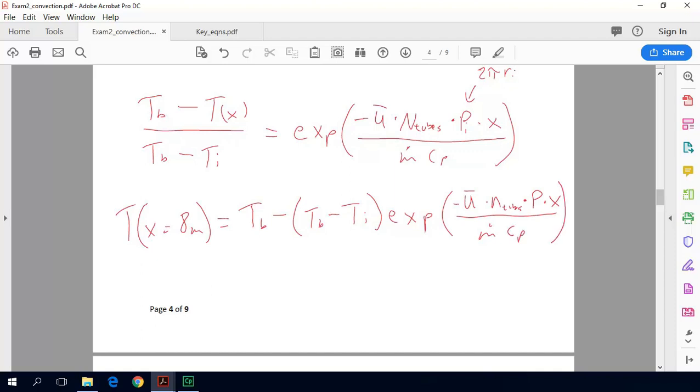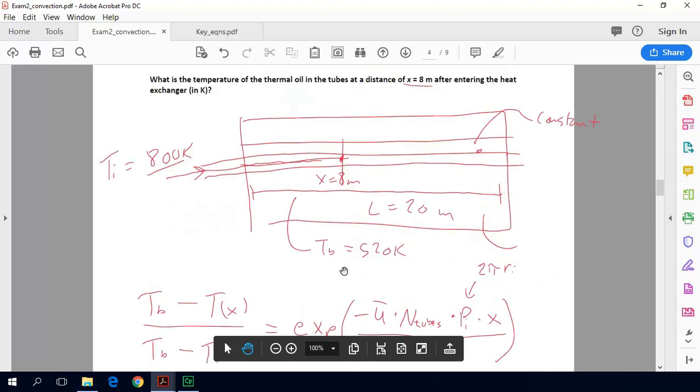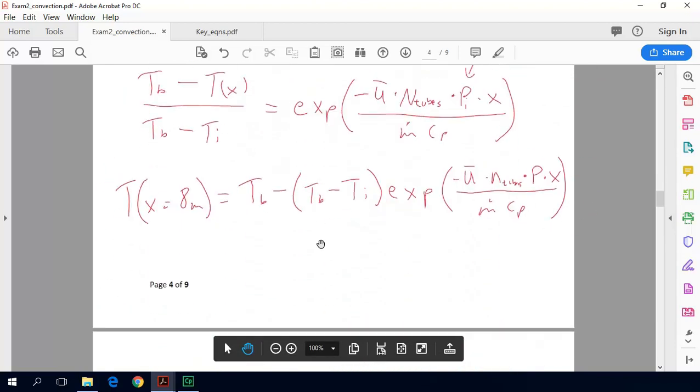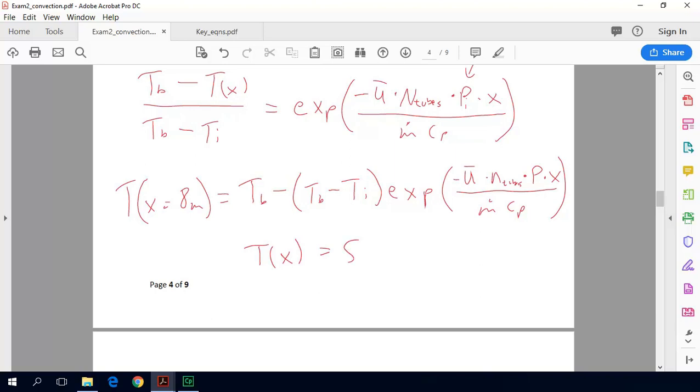So it ends up being, there's been a lot of explanation that has gone into it, but it ends up being a pretty simple problem where we just use this equation and now we plug and chug. So I'll spare you the plugging and chugging part. I'll let you do that on your own. But if you are doing this on your own, our T at X equals 8 meters comes out to be 542.9 Kelvin.